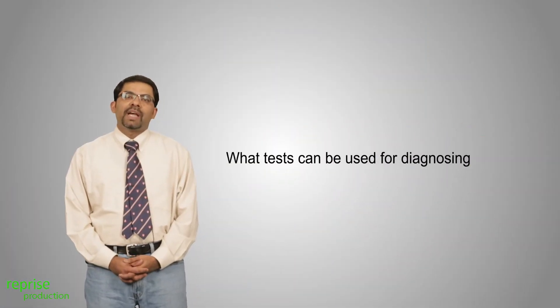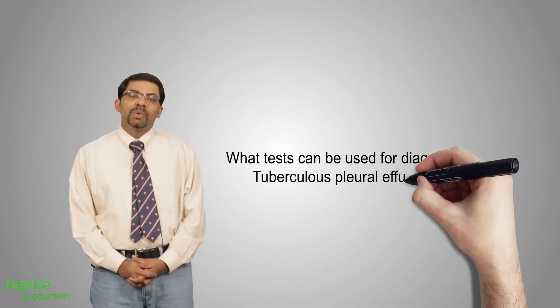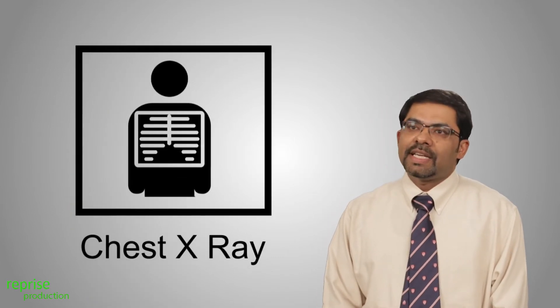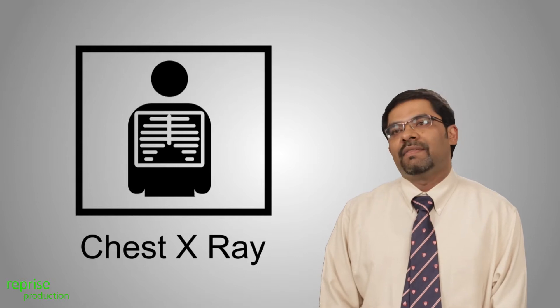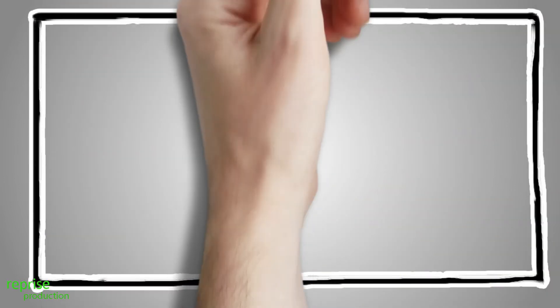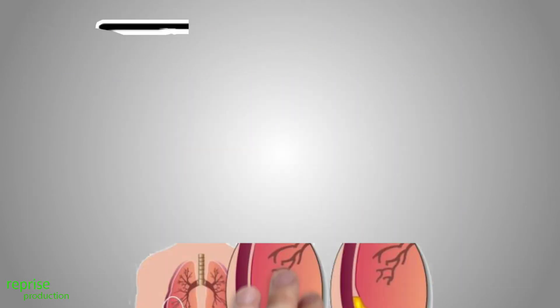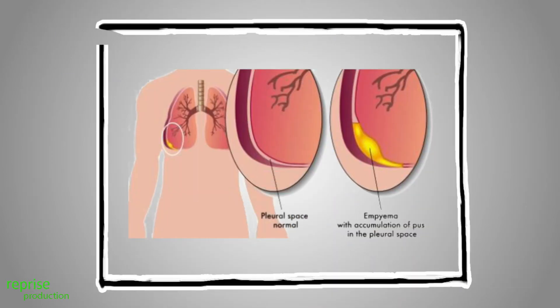What test can be used for diagnosing tuberculosis pleural effusion? Obviously a chest x-ray, which shows an effusion, is the start point for the investigation. If a pleural effusion is suspected to be of tuberculosis etiology, then a pleural aspirate or a pleural tap is recommended. The pleural fluid is then sent off for biochemical analysis.